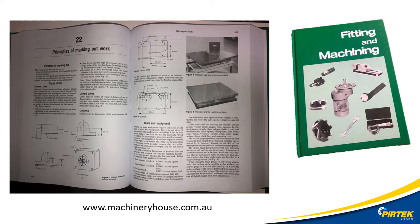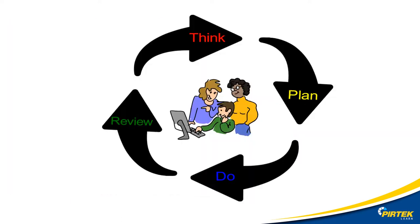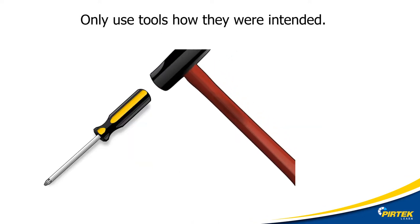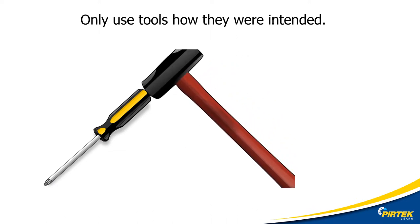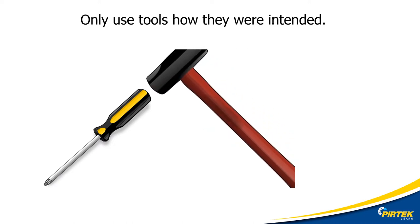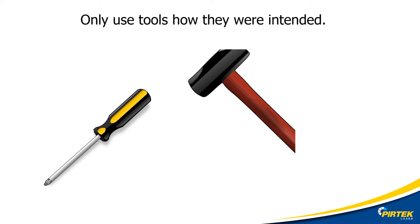If you'd like to purchase a copy of the fitting and machining textbook, freeze the video now — there's a link at the bottom of the screen. When marking off or out, mistakes can be catastrophic. Sometimes we don't have a second chance. It's more important than ever to think, plan, do, and then review. Using a screwdriver as a chisel could be disastrous. Using a steel rule as a screwdriver can come back and haunt you. Use tools only as they're intended.